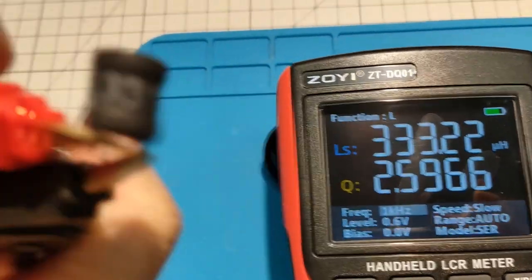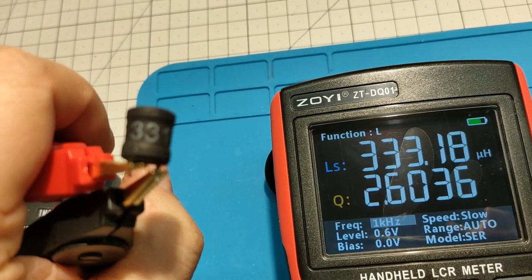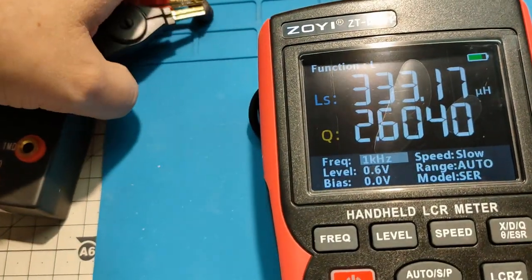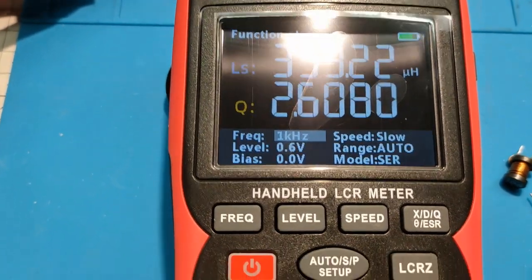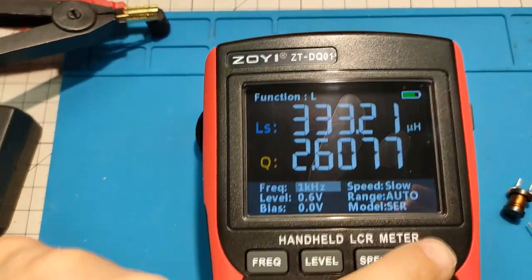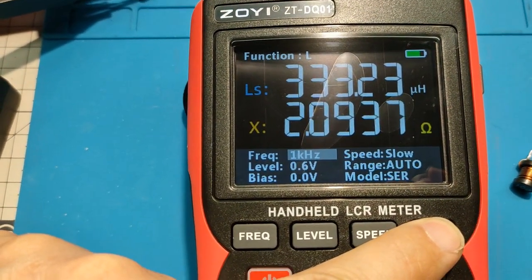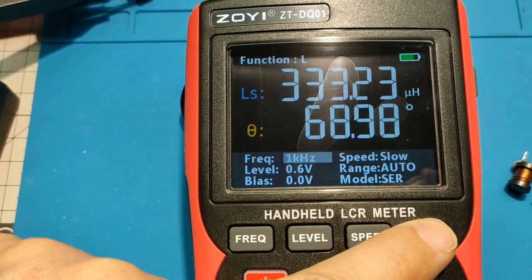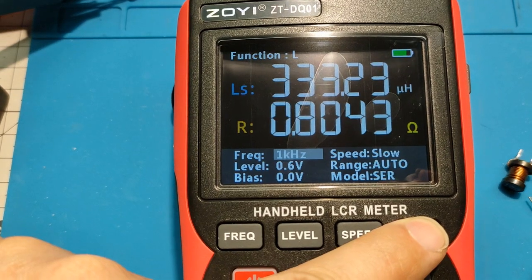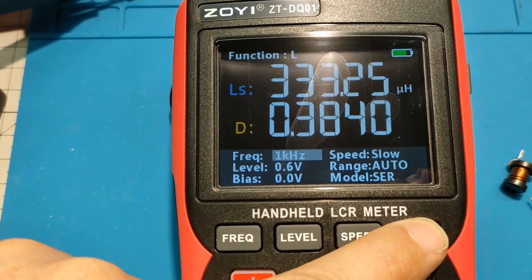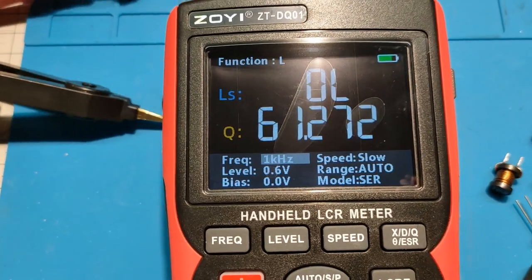It's supposed to be 330 microhenry. And it is. We can additionally measure the impedance, phase angle, and the resistance, and the Q and the D parameters.